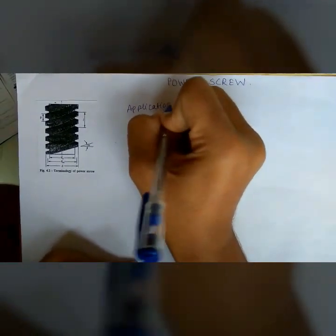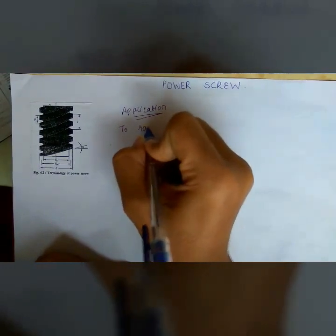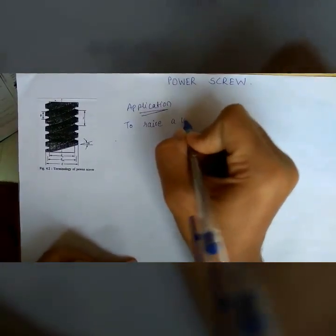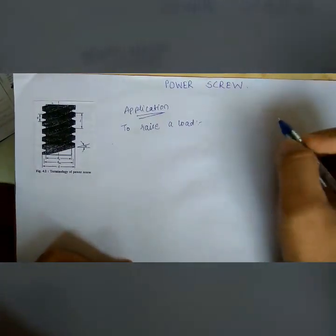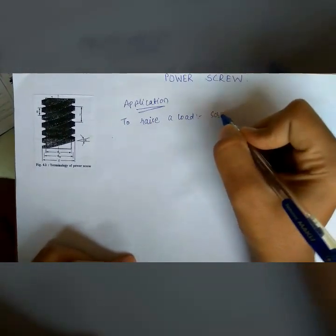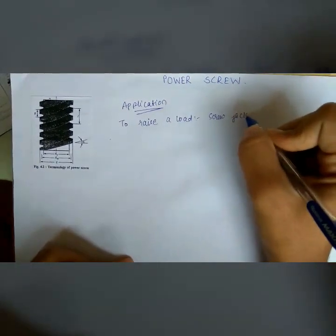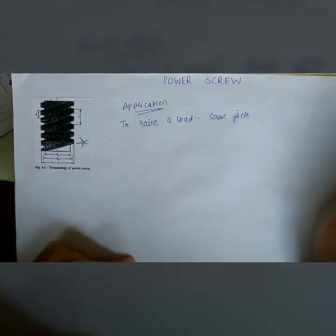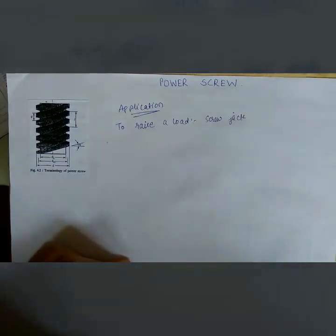The first application of a power screw is to raise a load. For example, take a simple automobile screw jack — when a tire gets punctured, you use a screw jack which consists of a screw and nut arrangement to raise the vehicle.